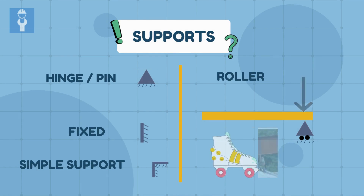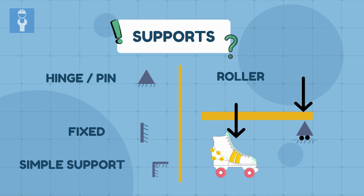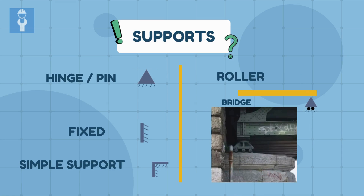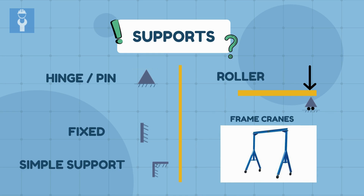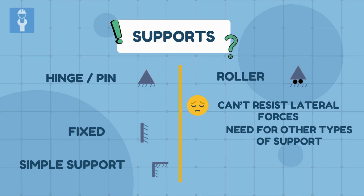Consider a load on roller skates. The weight remains in place if there is no horizontal force. However, once a horizontal force is applied, the body starts moving. Roller supports are advantageous, especially in bridge construction. We generally place roller supports at the end of bridge spans in the form of bearing pads. They're also used in frame cranes and allow for right or left movement. The disadvantage of roller supports is that they cannot resist horizontal forces, and there is a need for other types of supports to resist these forces in a structure.